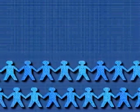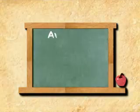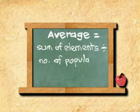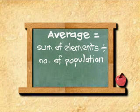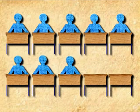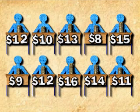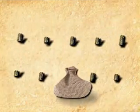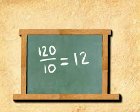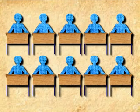The trouble is, what do we mean by average? We learn in math that to get the average, we add everything up and divide it by the number of people, or population, we're looking at. Let's say we have 10 fellows in a class, and the amount of money each person has in his or her pocket is as shown. The total amount of pocket money is 120, divided by 10, and we say that on average each person has 12.